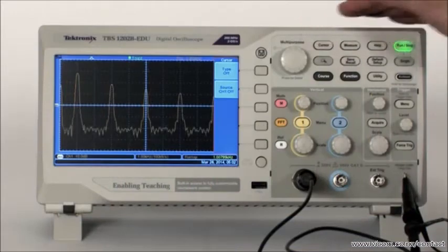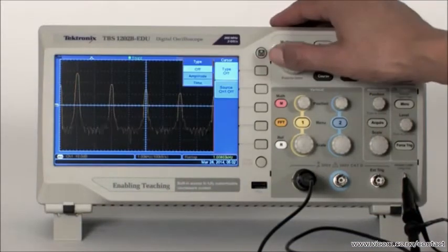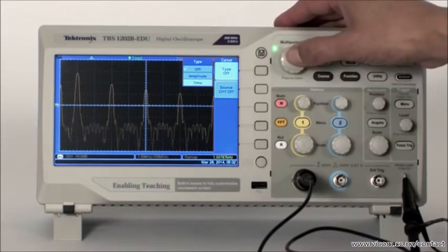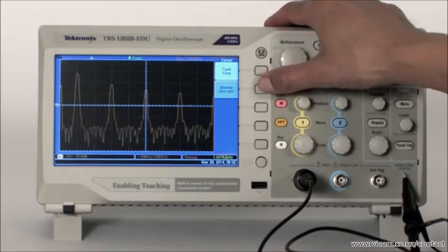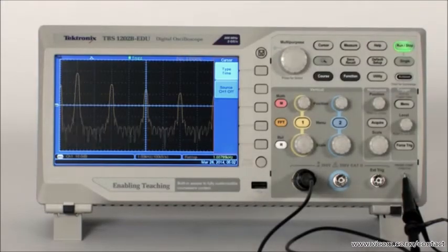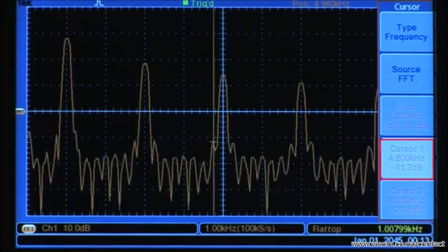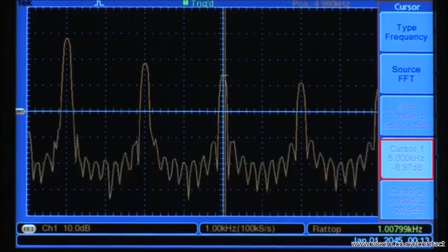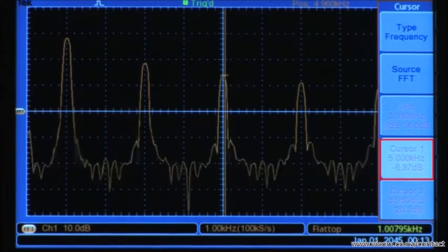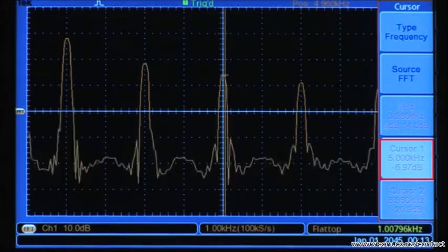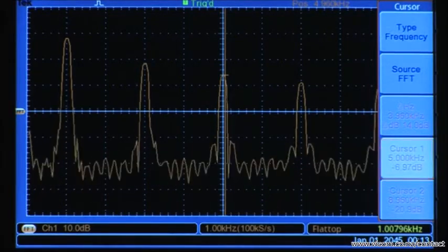Cursors provide an easy way to pick off information from the spectrum. We can clearly see the odd harmonics and we can measure their amplitude too. For example, we can confirm that the fifth harmonic occurs at 5 kilohertz and observe that it has an amplitude of about negative 7 dBV or about 400 millivolts RMS.